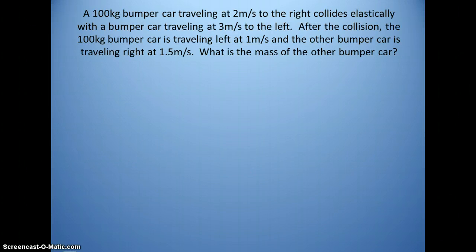We'll do another one. This time, it'll be an elastic collision where they bounce off. Here, you have a 100-kilogram bumper car traveling at 2 meters per second to the right. It has an elastic collision with a bumper car traveling 3 meters per second to the left.